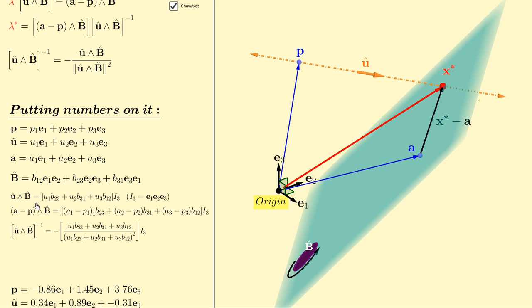And we also get expressions for u hat wedged with b hat, and the thing to note here is that all of this, this sum of different coefficients, is a scalar.